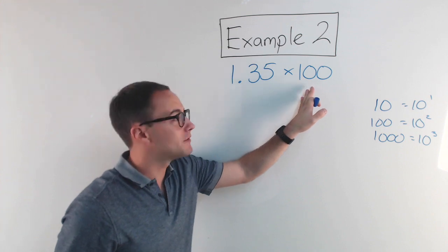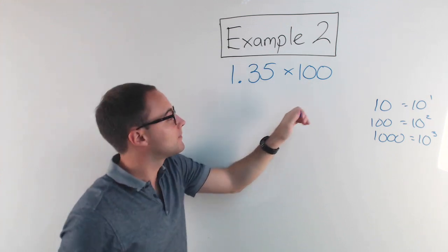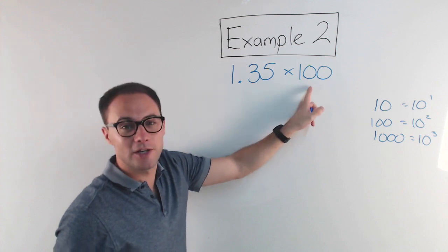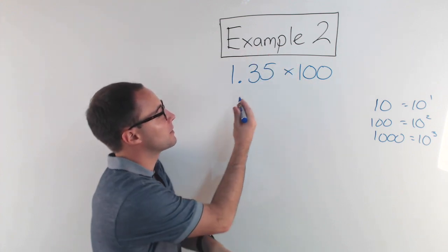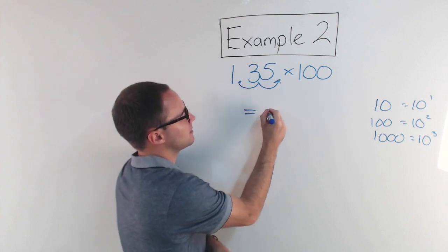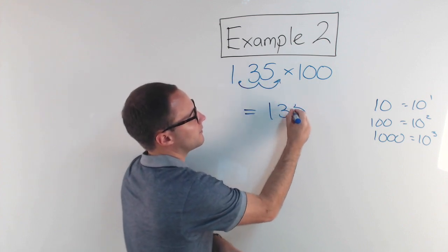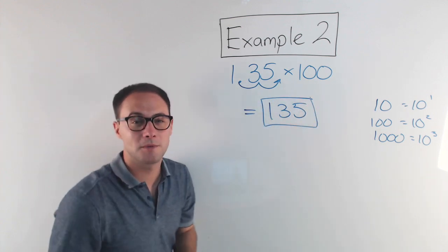So with that in mind, this problem becomes much much easier. I'm multiplying by a power of 10, I'm going to move it to the right because I'm multiplying, and there's two zeros, or I can think of that as 10 squared, to the power of two, so I'm going to move it once, twice. So that becomes 135. Okay, very simple. Here's something to try on your own.